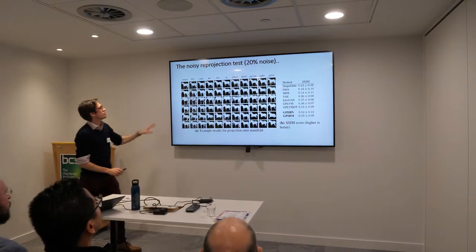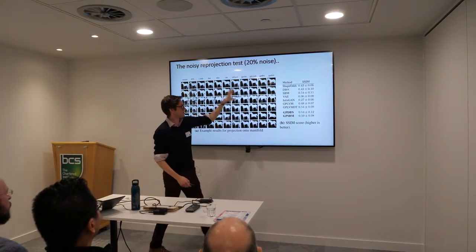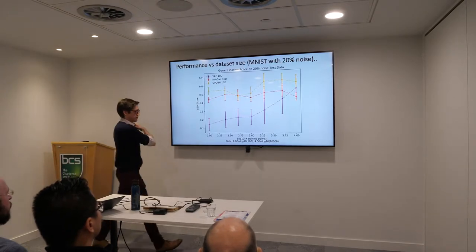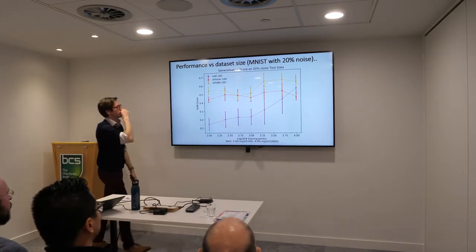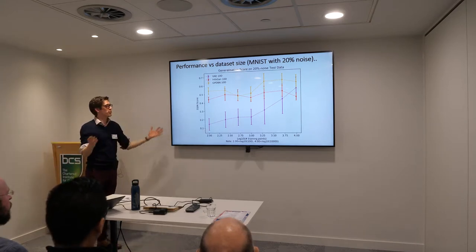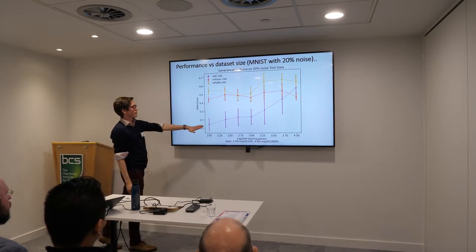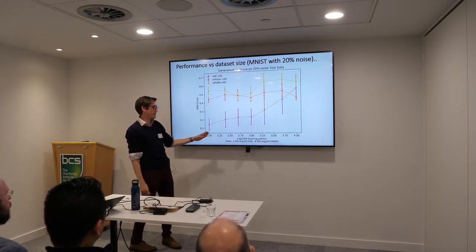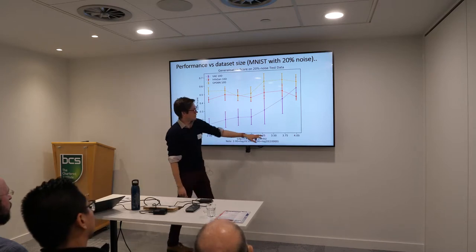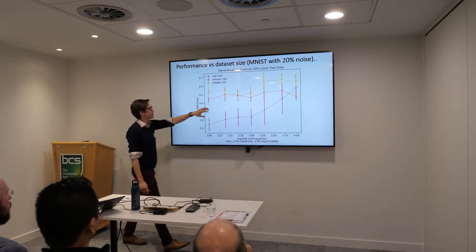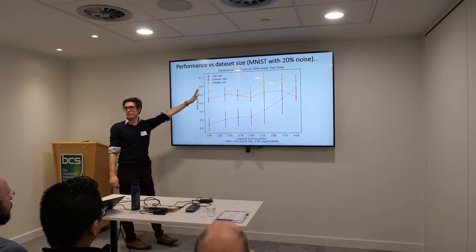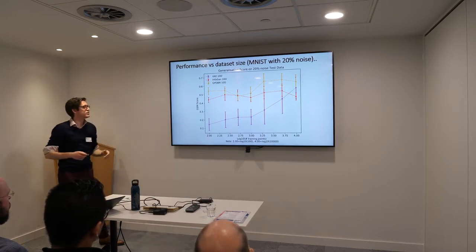It also works when you do noisy samples. The really interesting thing is that when you propagate uncertainty through during training, you get a significant data efficiency effect. This is the log base 10 of training dataset size: for MNIST, the VAE needs around 10,000 samples to get the same type of reconstruction that this model achieves with only about 100 samples, because it's accounting for uncertainty during training.